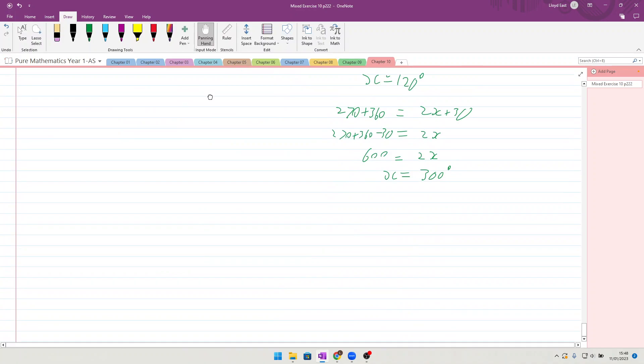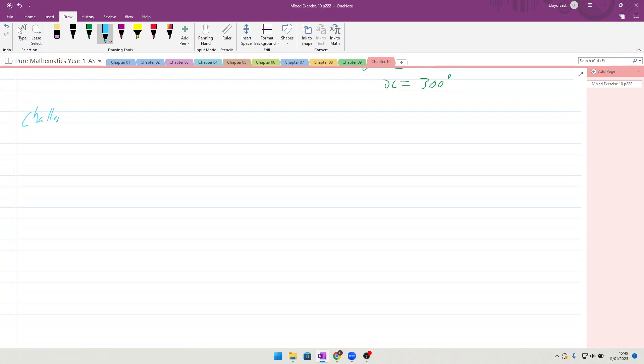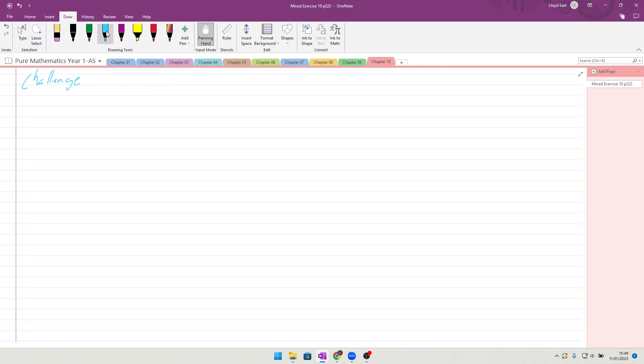Right, challenge question. Only one in this chapter, so solve the equation tan⁴x - 3tan²x + 2 = 0.